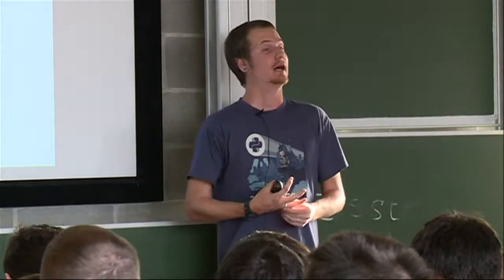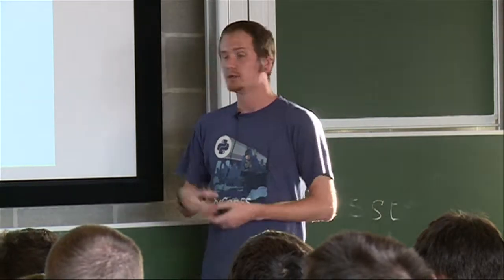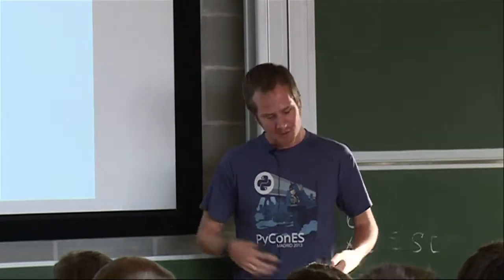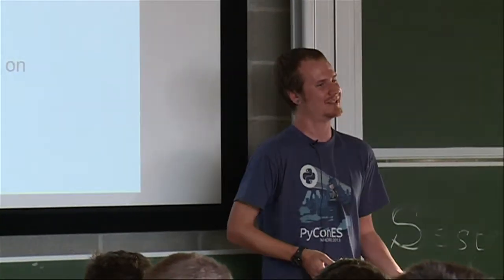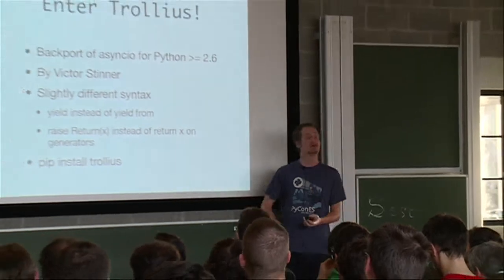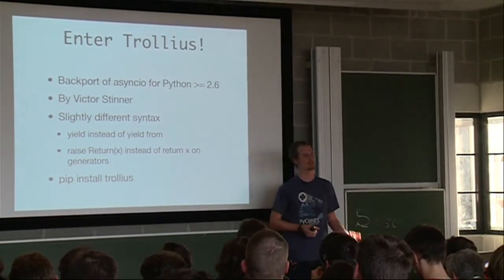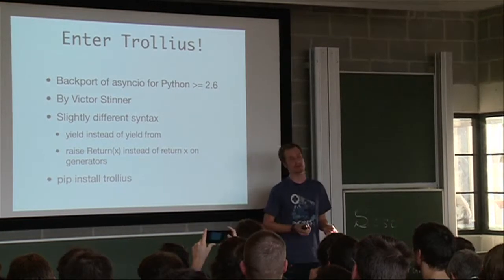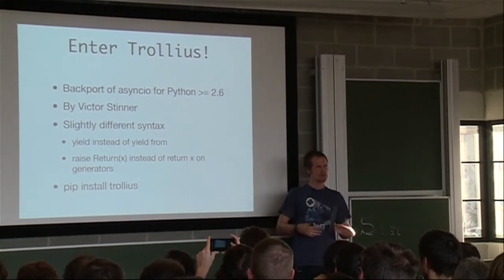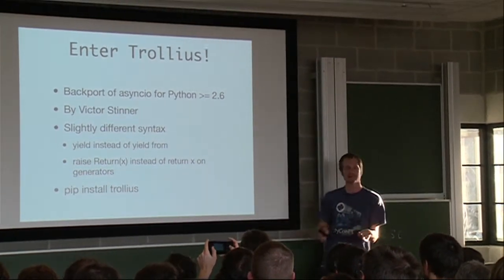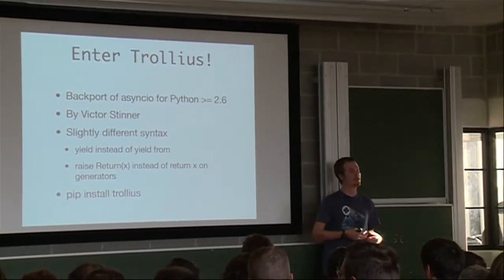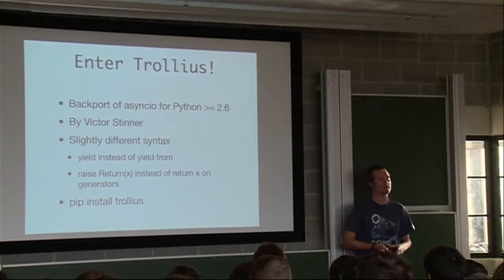Now, news. Recently, Victor Steiner created the Trollius project, which is basically a backport of asyncio to 2.6, what Guido didn't want whatsoever, but it's possible. However, you need to adjust a bit the syntax. So, there is no yield from, so yield needs to be used all the time. And also, you cannot do return from a generator, so the trick is usually to raise an instance of a special class, like return. It looks pretty horrible to do raise return x, but that actually works on Python 2.6 as well. It's available on pip, so you can do pip install Trollius, and that will just work.